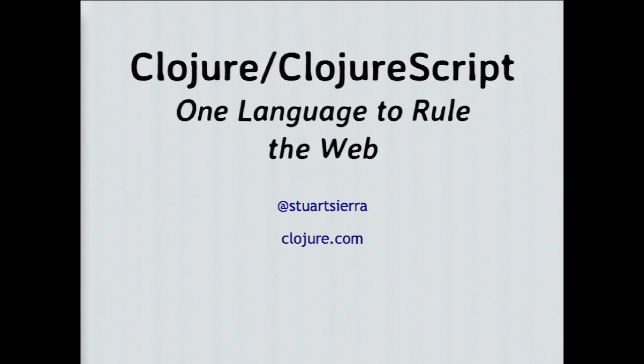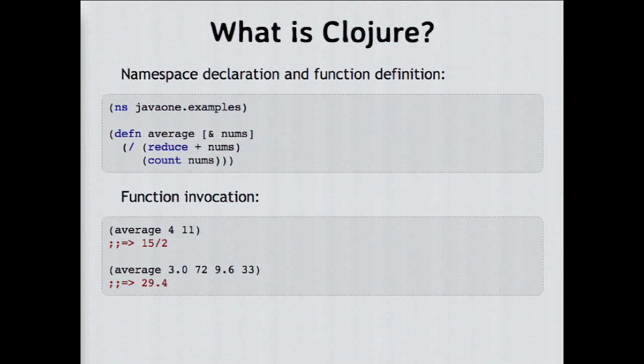First, a quick introduction. What is this mysterious thing called Clojure? Clojure is a fairly new, dynamically typed, Lisp-like language for the Java Virtual Machine. It compiles to Java bytecode, it runs on the JVM, and it's organized around the ideas of functional programming, immutable data structures, and built-in support for shared memory concurrency.